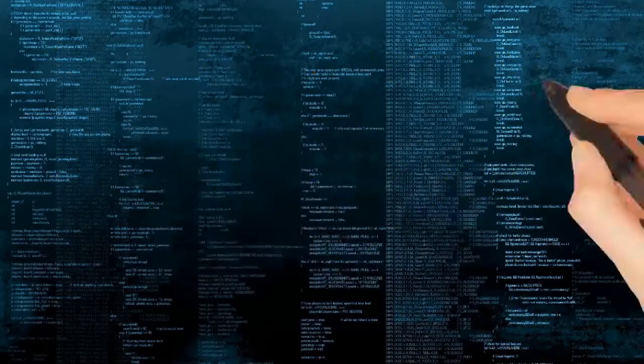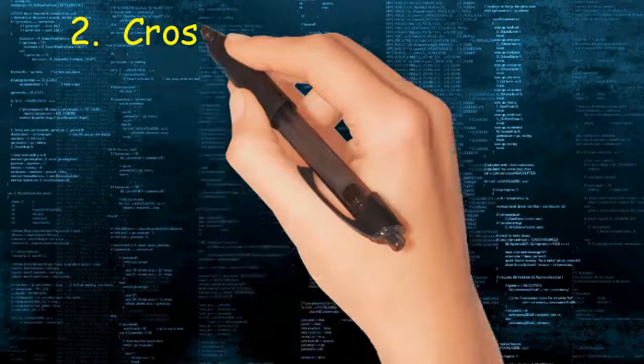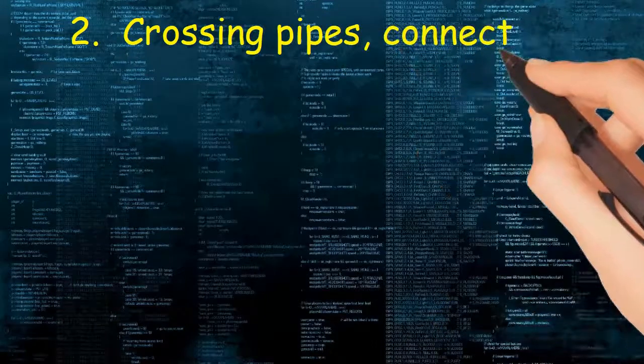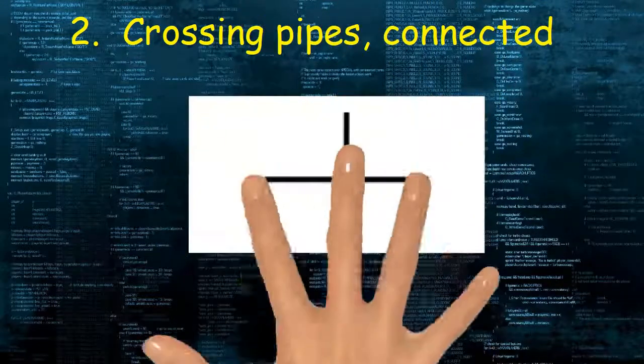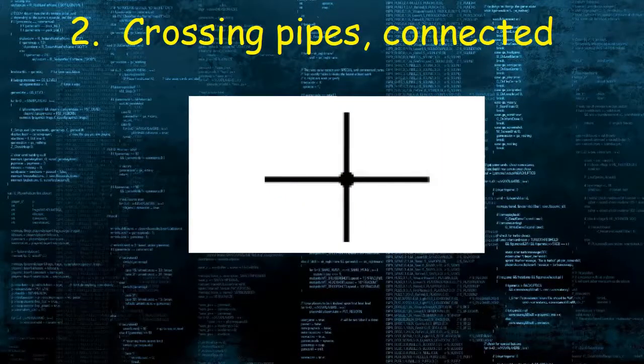Number 2: Crossing pipes, connected. The symbol with two lines intersecting and dot at center means connected crossing pipes.